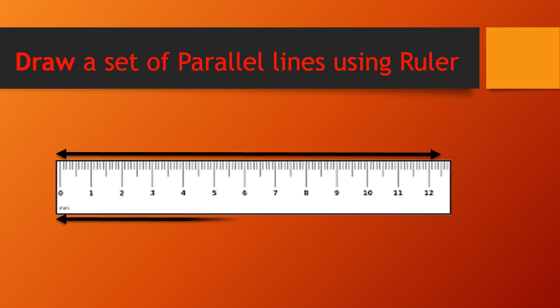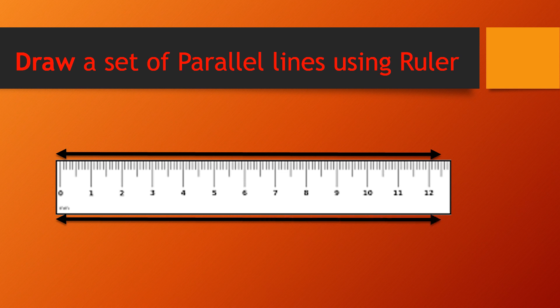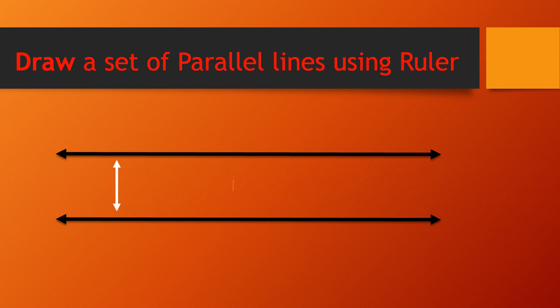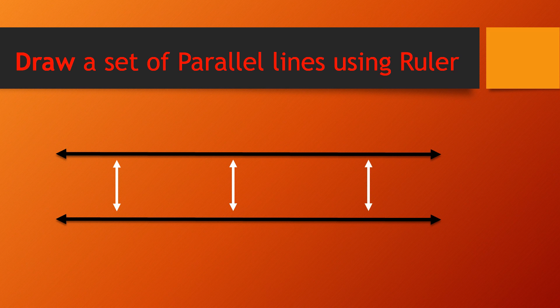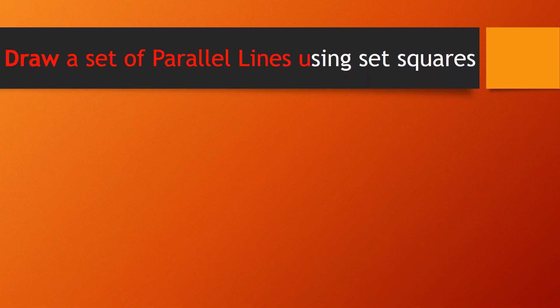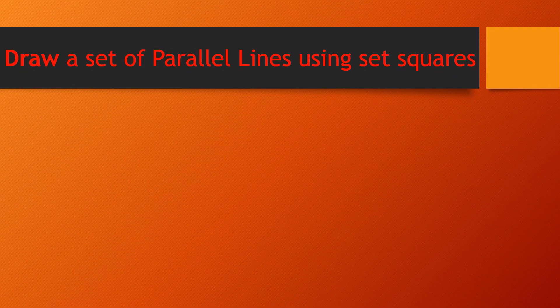We can draw parallel lines using ruler. First you are going to put your ruler, then draw two lines on each side. Make sure they are each same distance apart.